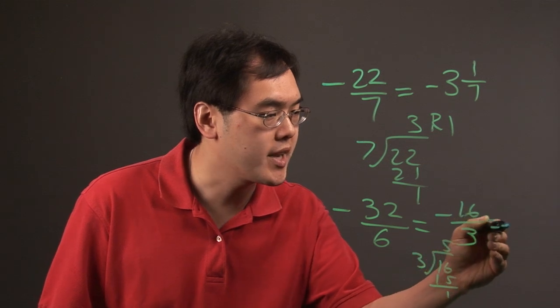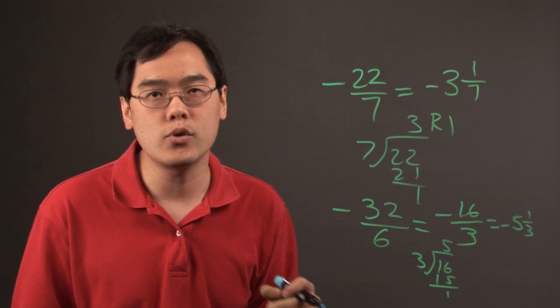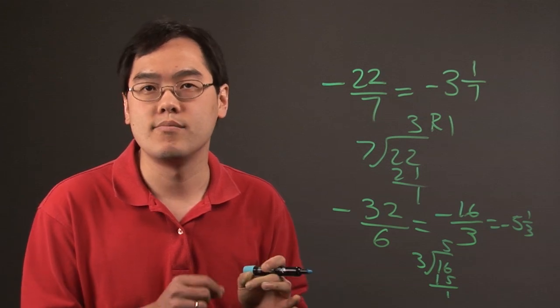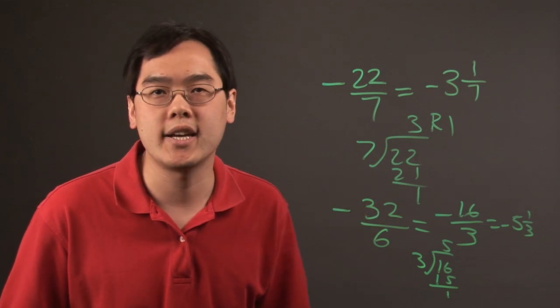So this is negative 5 and 1 third. So when you're reducing negative and improper fractions, it's the same kind of rules as you normally would. The rules are pretty much the same regardless of sign. So I'm Jimmy Chang, and that's how to reduce improper negative fractions.